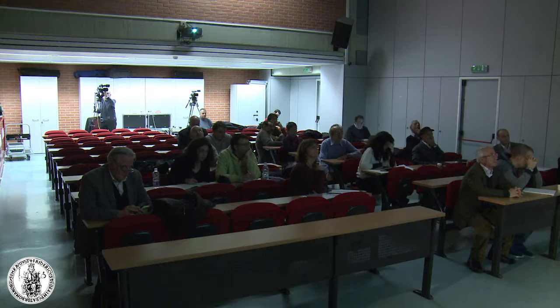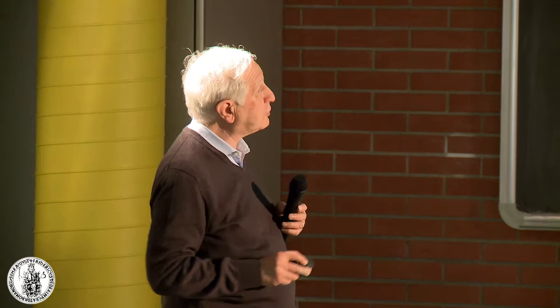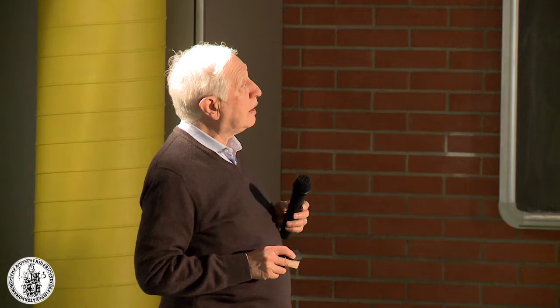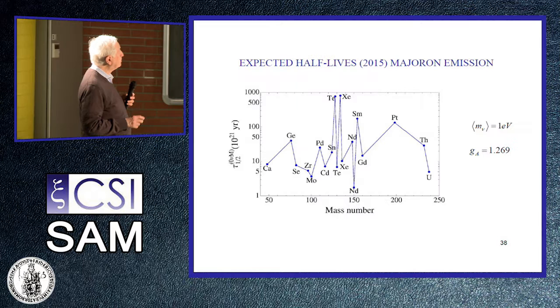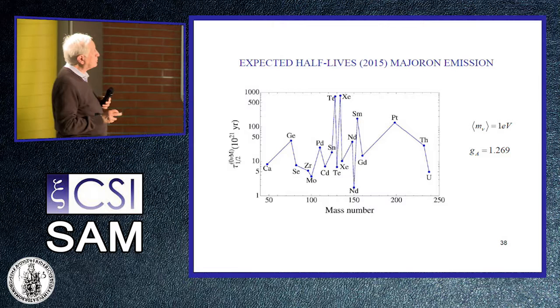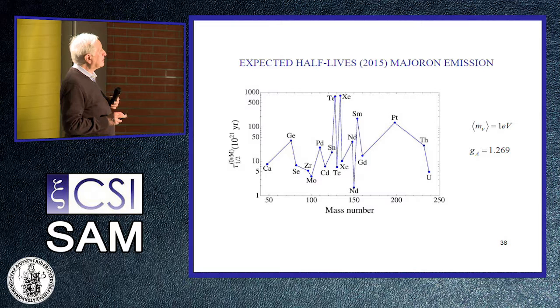The expected half-lives for resonant double electron capture show that the best cases are tungsten and gadolinium. An experiment in gadolinium is being planned in the United States. For majoron emission, the situation is similar to the other cases. The best case is once more neodymium, but tellurium is comparable — they are all of the same order of magnitude.